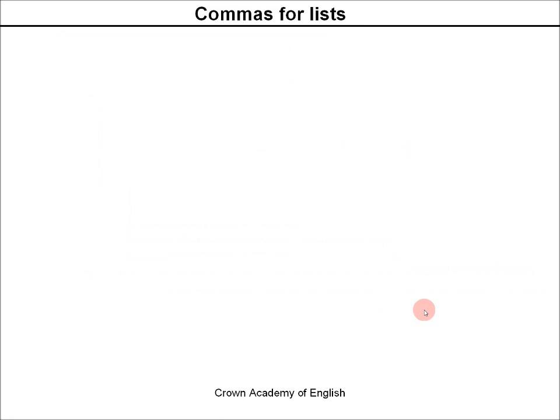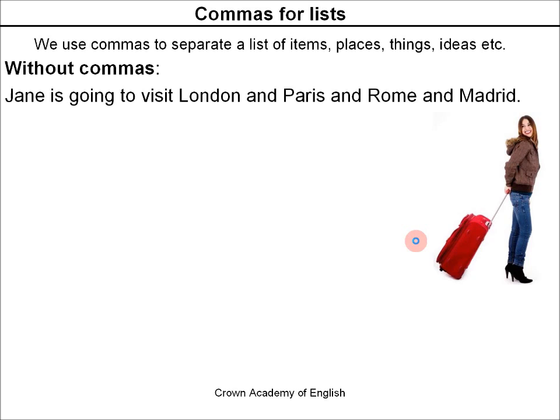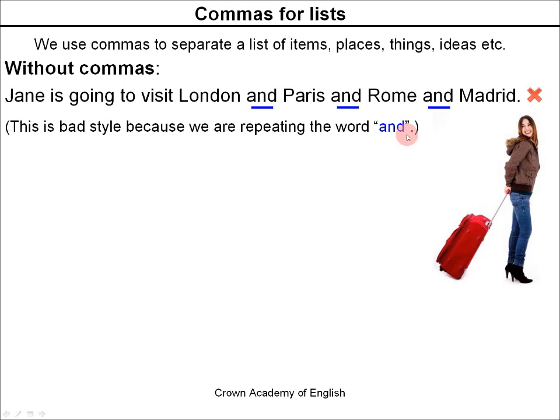Now let's continue with the lesson about commas. Commas for lists — we use commas to separate a list of items, places, things, ideas, etc. Let's look at a sentence without commas: 'Jane is going to visit London and Paris and Rome and Madrid.' This is bad style because we are repeating the word AND three times. So it's not good — it's very bad English. So we need commas.